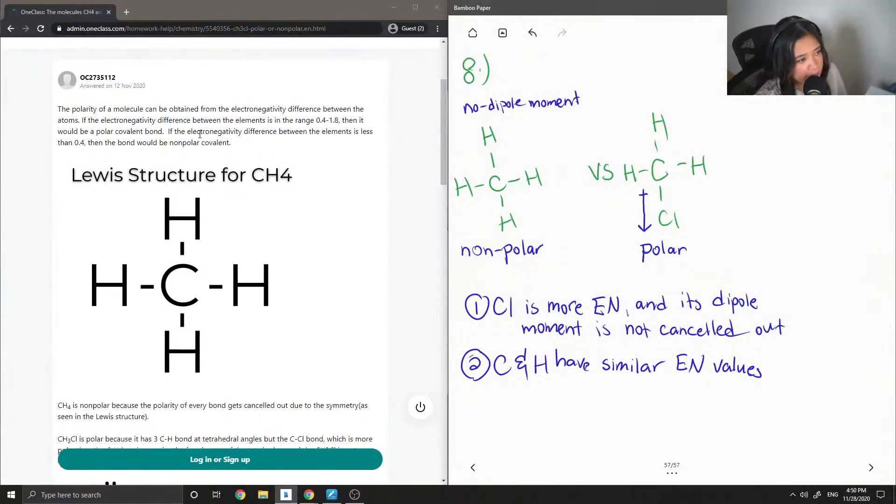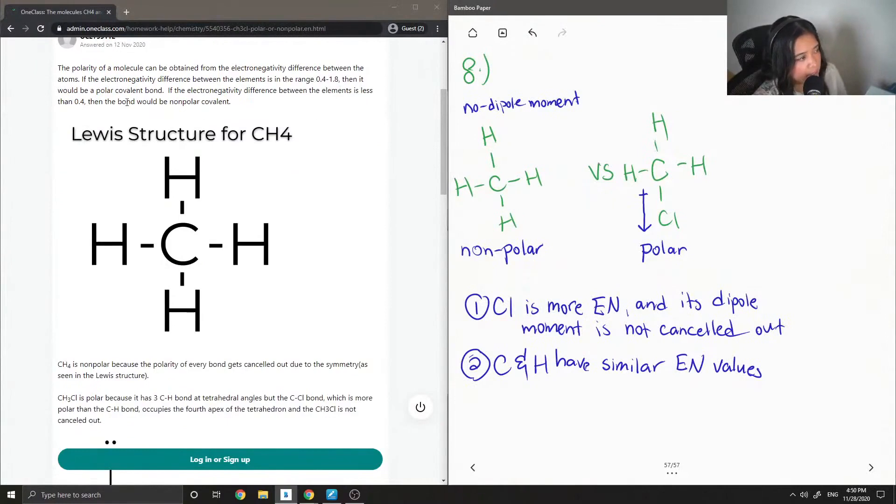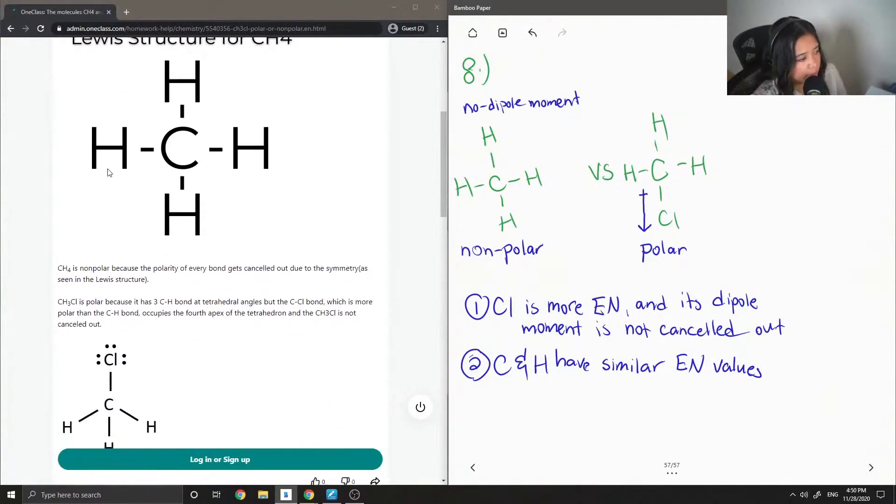If the electronegativity difference between the elements is less than 0.4, the bond would be non-polar covalent.